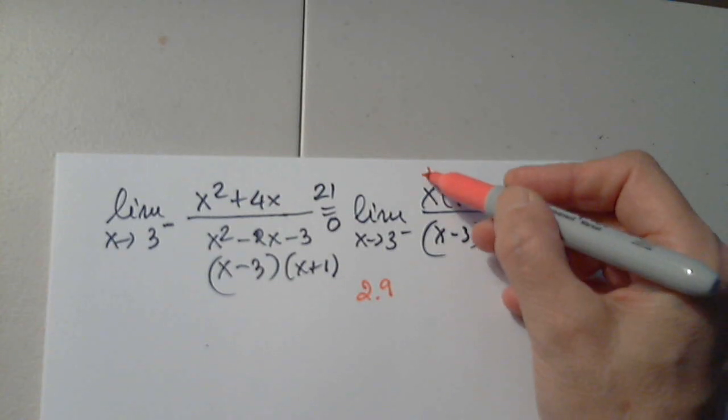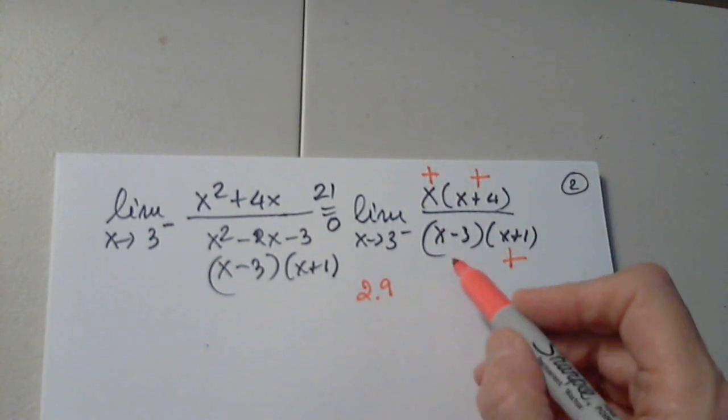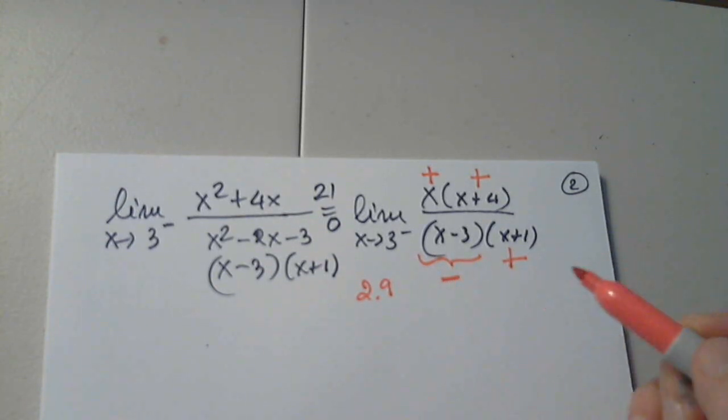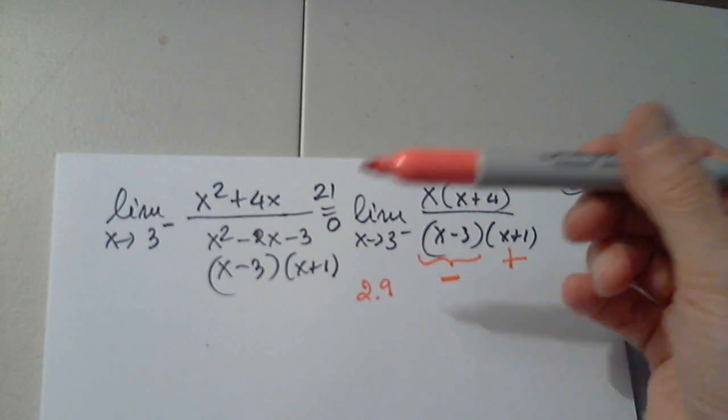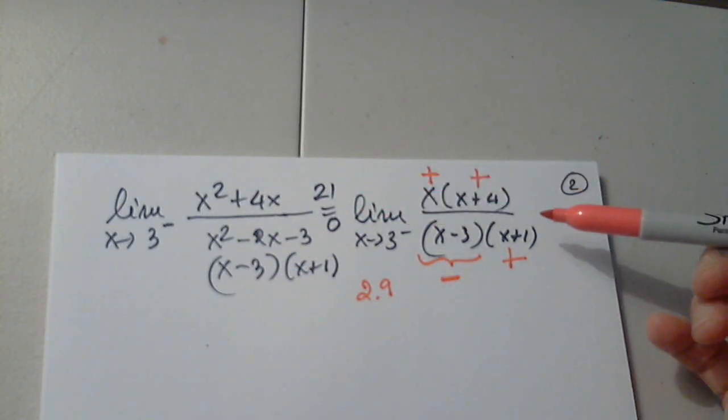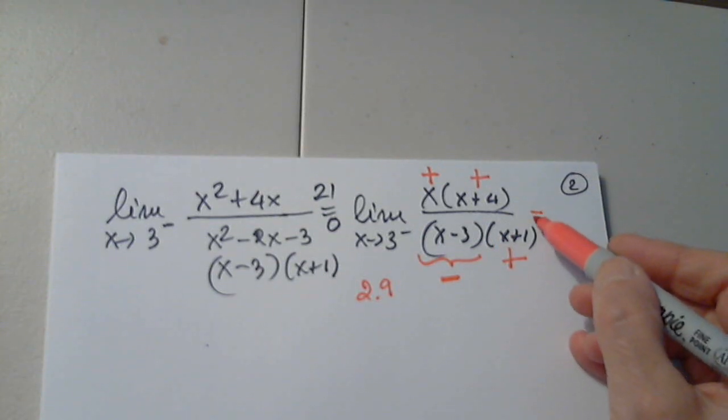Because now I need to plug in or imagine I plug in three from the left is 2.9. With 2.9, this is positive and this is positive and this is positive. But with 2.9, this is negative. So I know that this situation is no hope. And I can only choose one option, positive infinity, negative infinity, or D and E. Which option will I pick here?